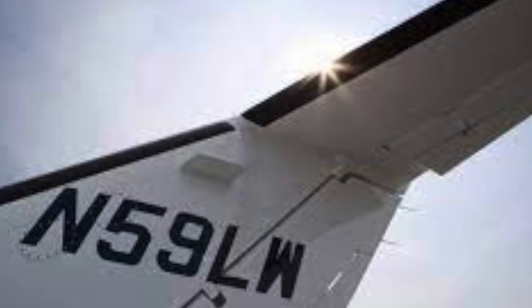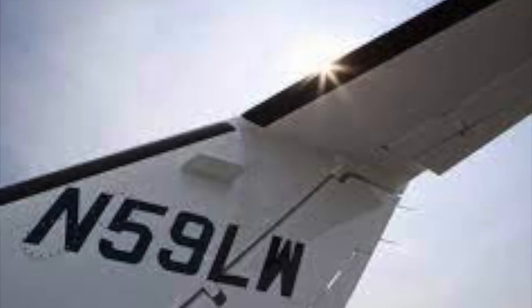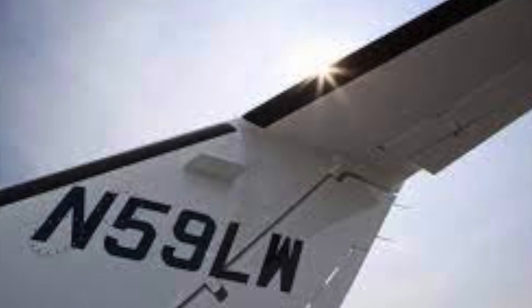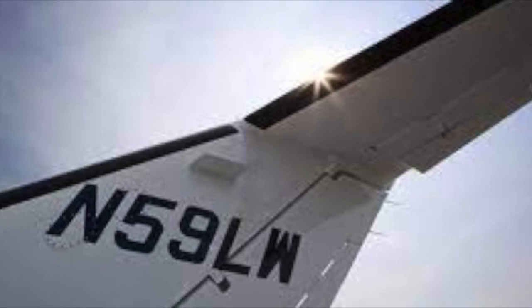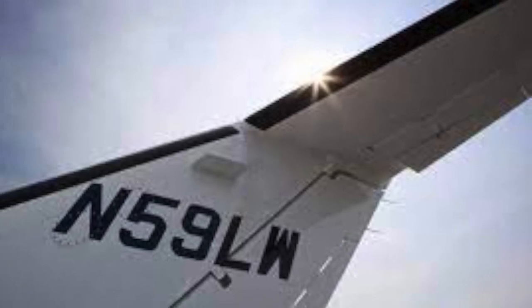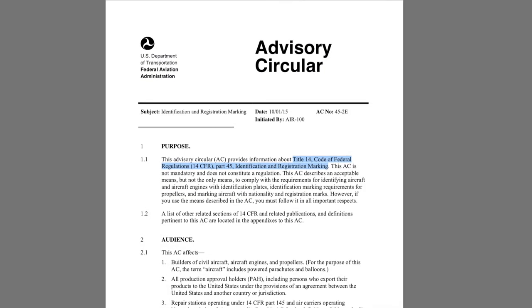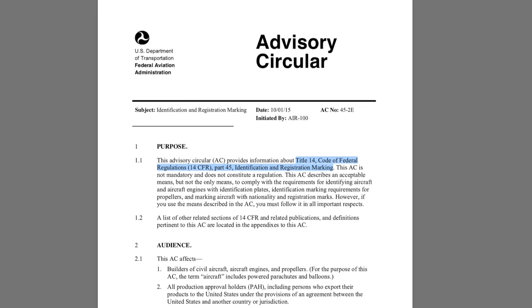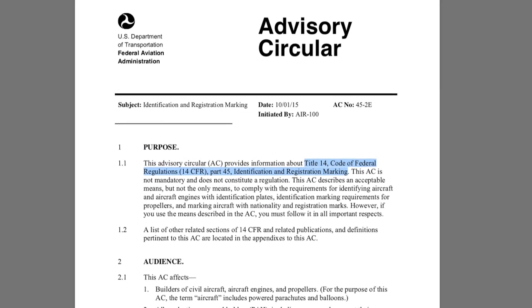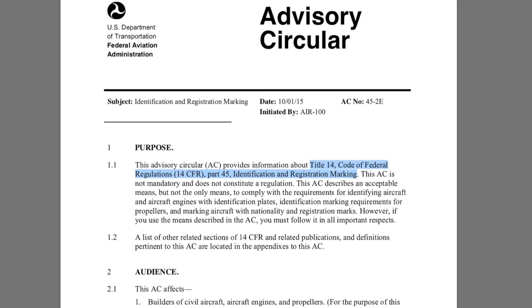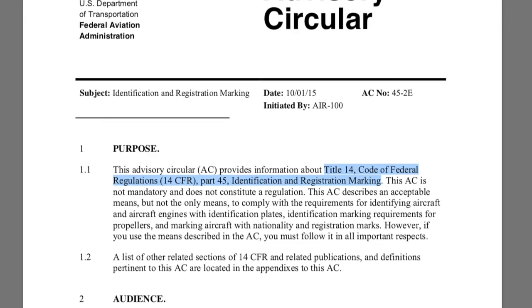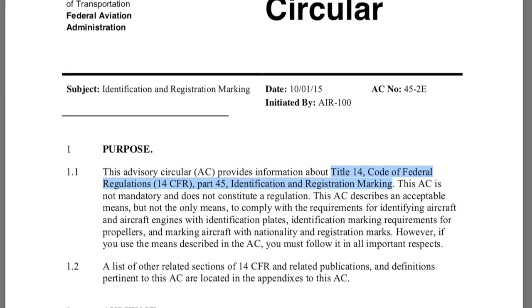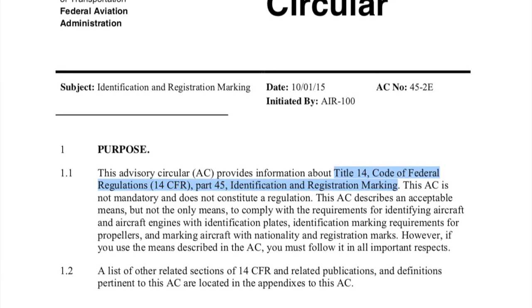Wing surface markings were no longer required. Current standards for the display of nationality and registration identification marks on U.S. aircraft can be found in Part 45, Subpart C of the U.S. Code of Federal Regulations, Title 14.